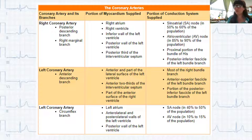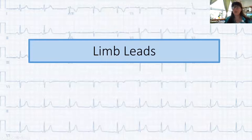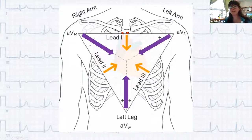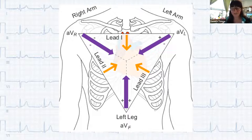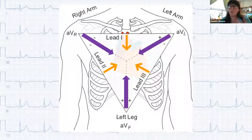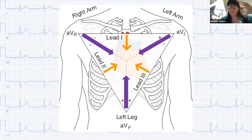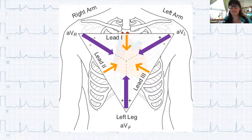Now let's talk about actually doing the 12-lead. There are limb leads — we place four: right arm, left arm, right leg, left leg — which combine to make bipolar leads. Leads 1, 2, and 3 are the standard bipolar limb leads, registering voltage between two leads on the frontal plane. The three electrodes on the limbs form Einthoven's triangle, and you can see the yellow areas showing what those bipolar leads are viewing from different angles.